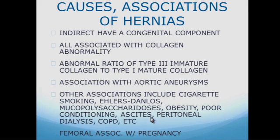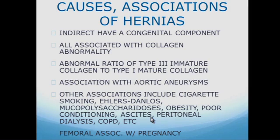Causes and associations of hernias: indirect hernias have a congenital component. All hernias are associated with collagen abnormalities — an abnormal ratio of type three immature collagen to type one mature collagen. This same collagen deficiency causes aortic aneurysms. Other associations include cigarette smoking, which destroys collagen, as well as Ehlers-Danlos syndrome, mucopolysaccharidoses, obesity, poor conditioning, ascites, peritoneal dialysis, and COPD. Femoral and umbilical hernias are associated with pregnancies — the more pregnancies, the greater the risk.